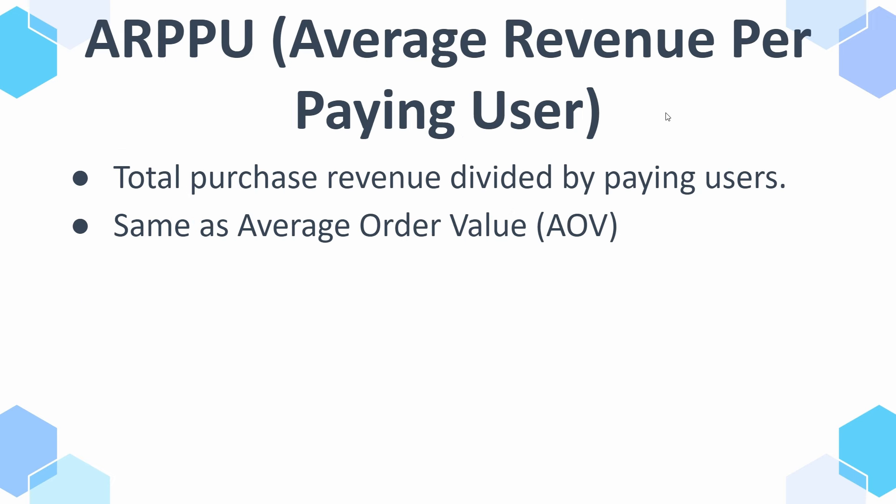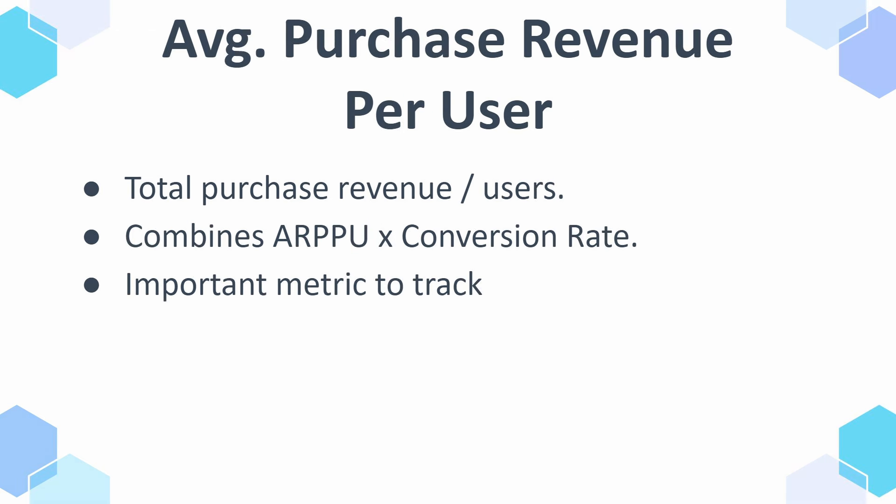Next we have ARPPU — average revenue per paying user — which is kind of similar to average order value. It's total purchase revenue divided by paying users, so you know on average how much people who buy are spending. By default this doesn't appear anywhere, but you can always add it to your reports.